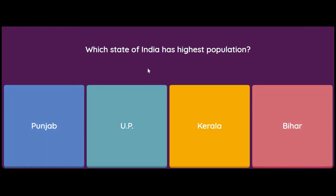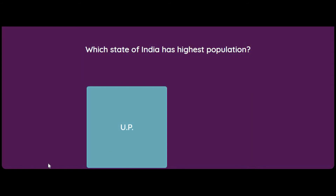Which state of India has the highest population? Options are Punjab, UP, Kerala, or Bihar. We know it is Uttar Pradesh which has the highest population.